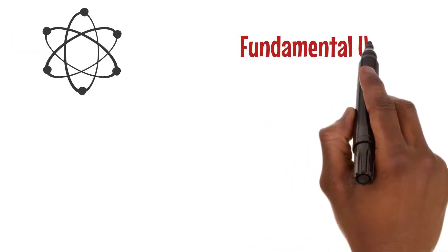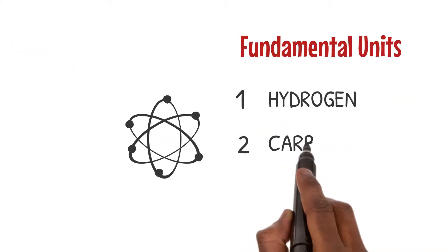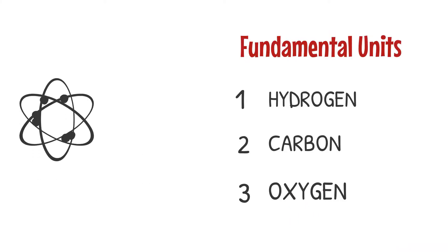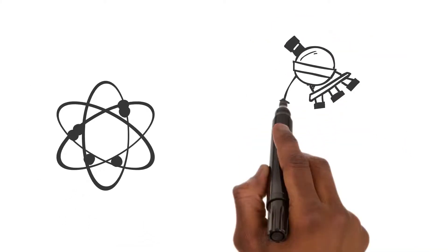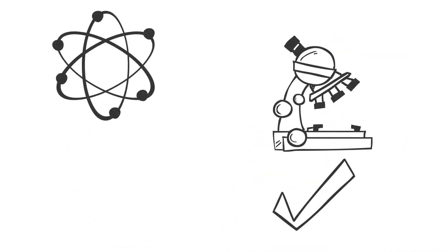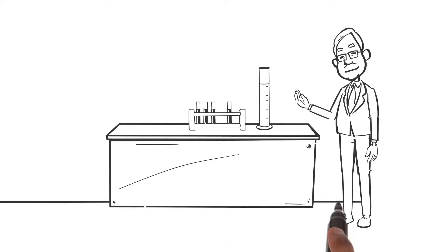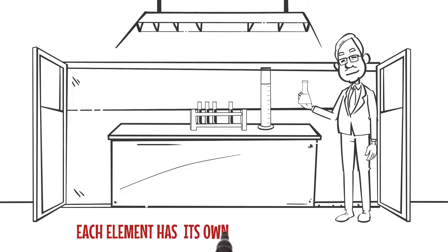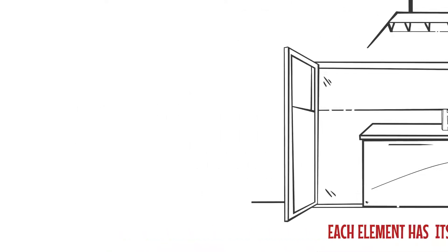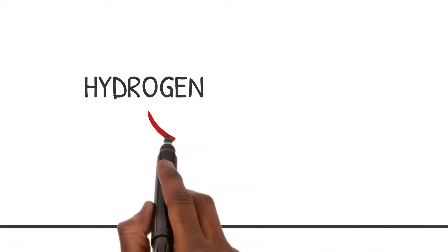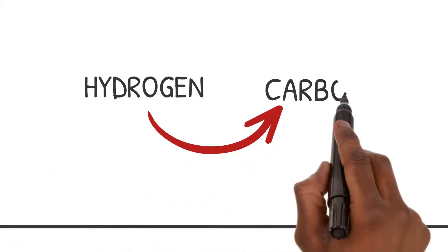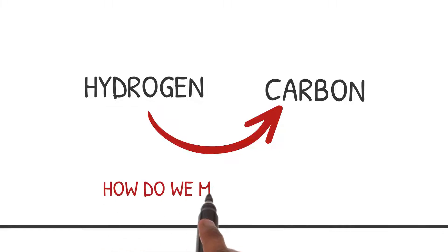Atoms are the fundamental units of elements like hydrogen, carbon, and oxygen. They are so small that we can't see them with our naked eyes. Scientists have discovered that each element has its own special kind of atom. For example, hydrogen atoms are different from carbon atoms.